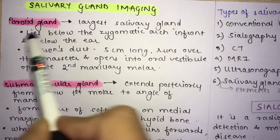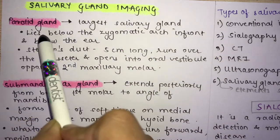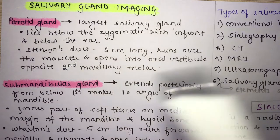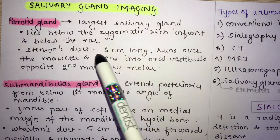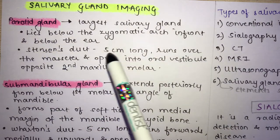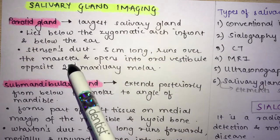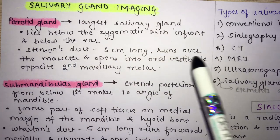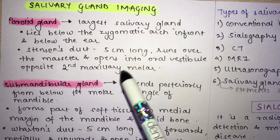The parotid gland is the largest salivary gland. It lies below the zygomatic arch, in front and below the ear. It has Stensen's duct, which is 5 cm long. It runs over the masseter muscle and opens into the oral vestibule near the second maxillary molar.